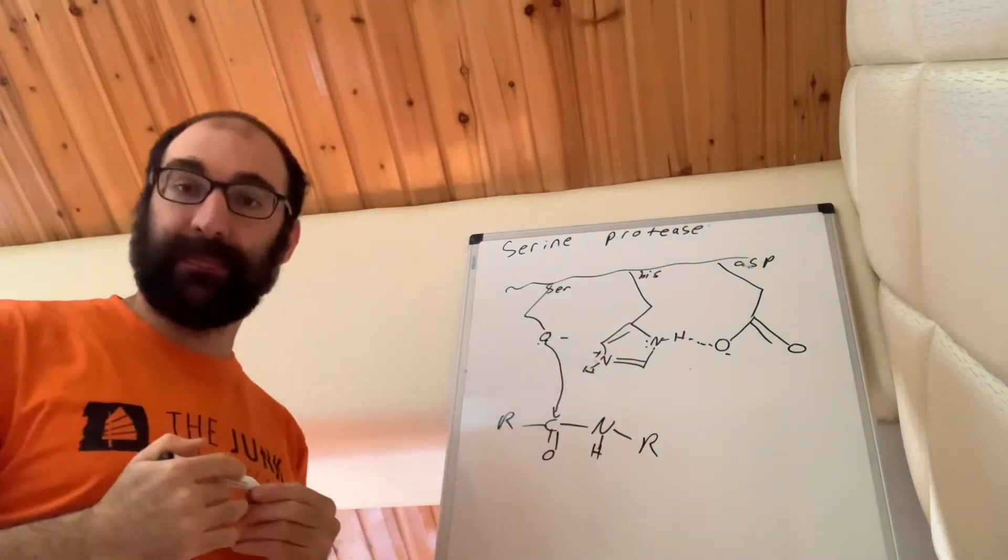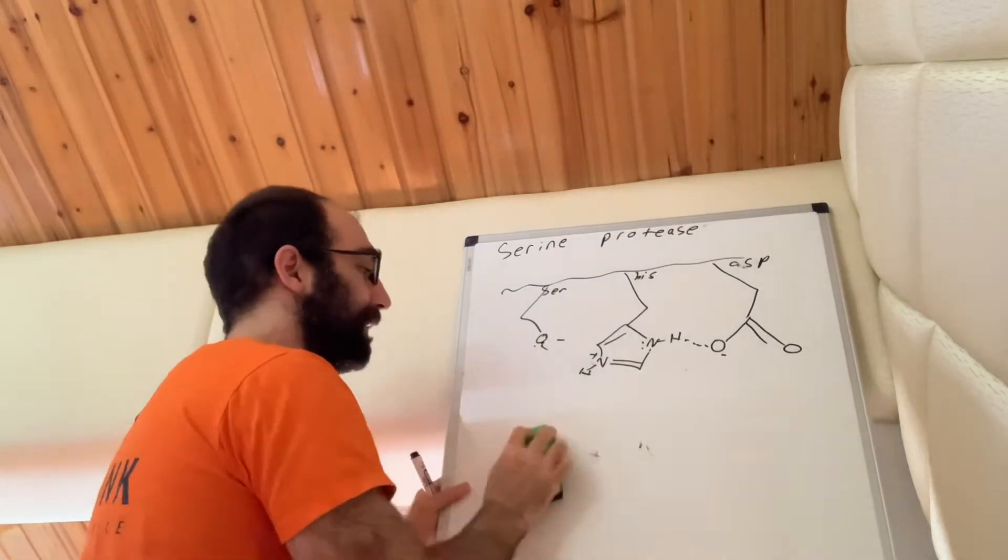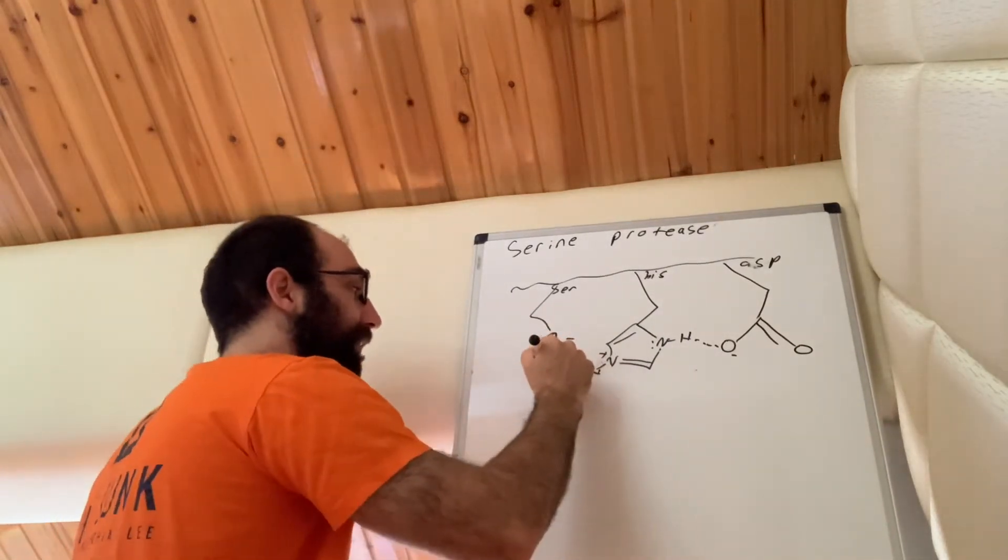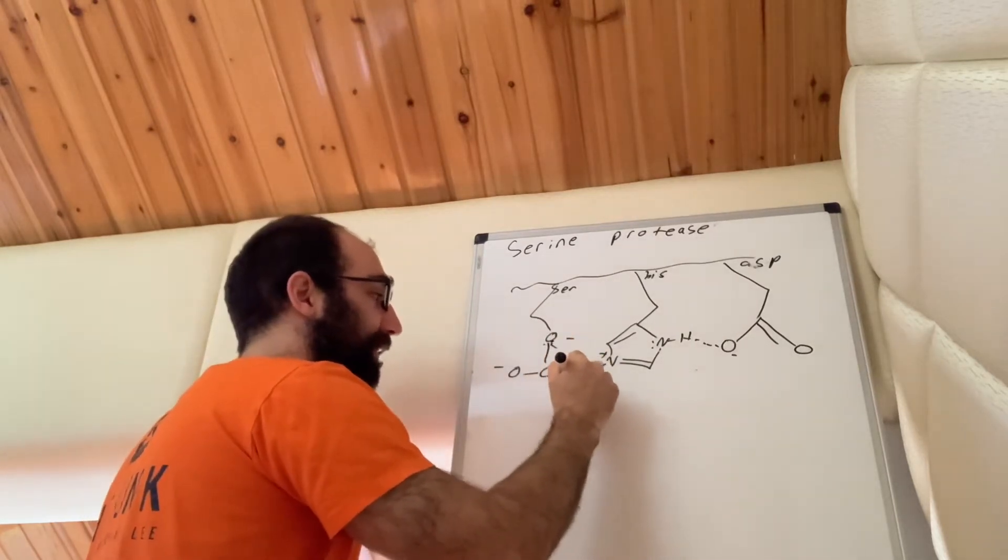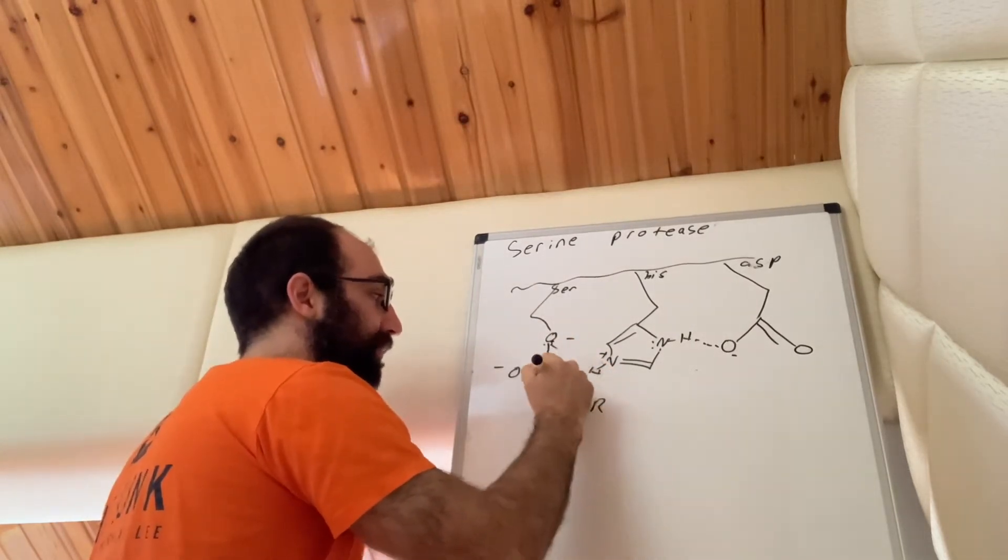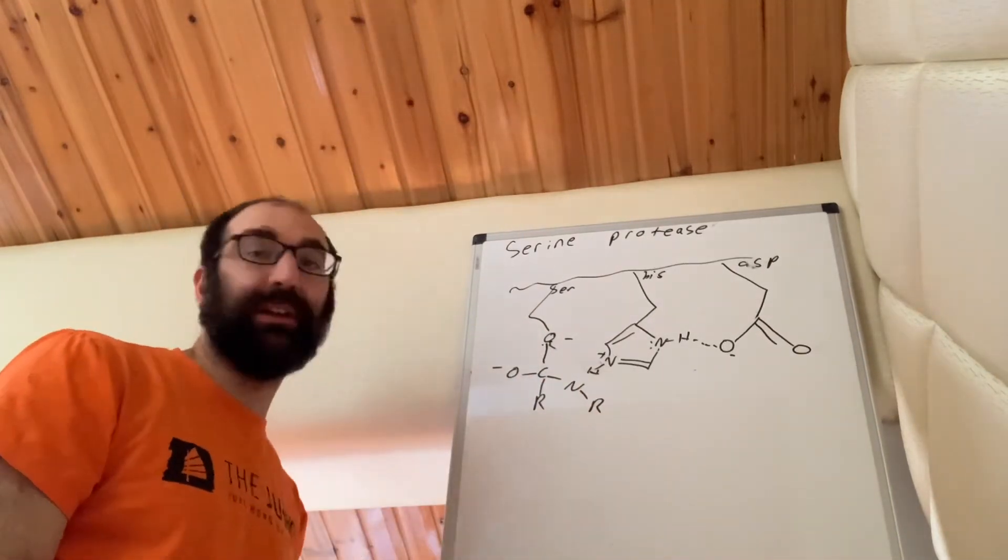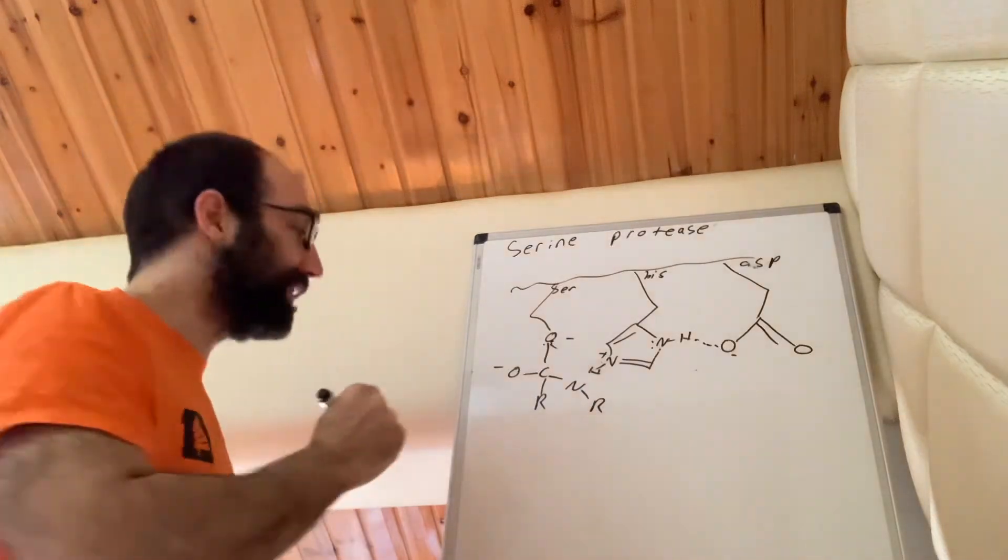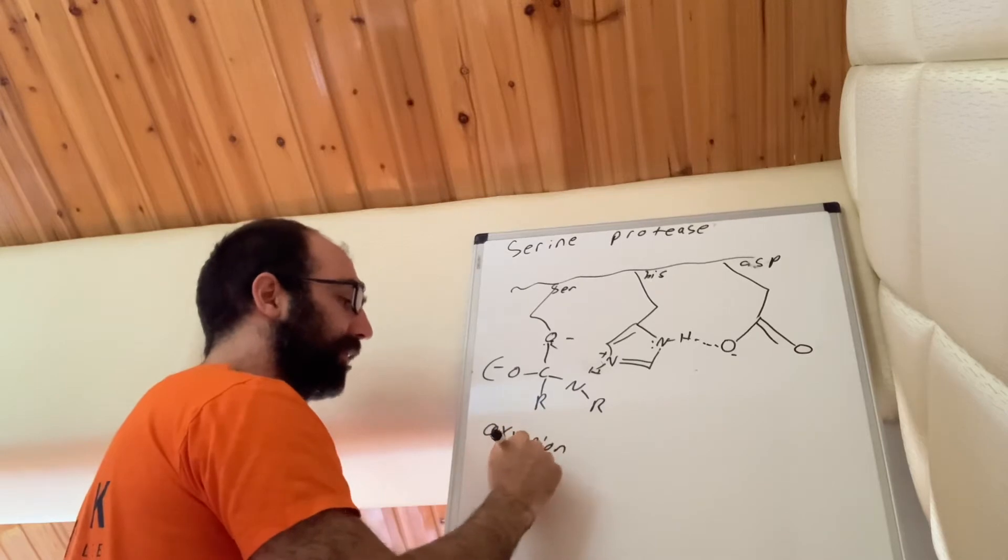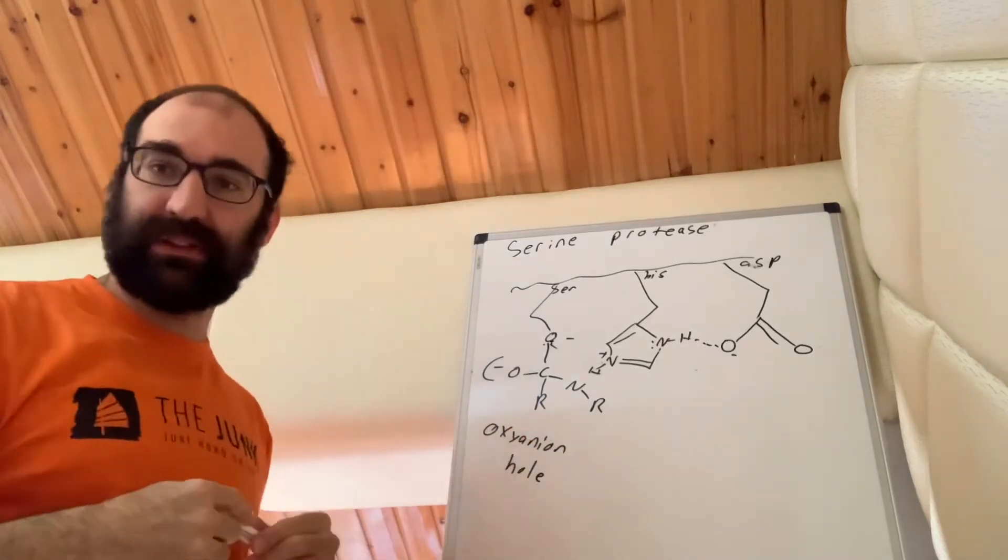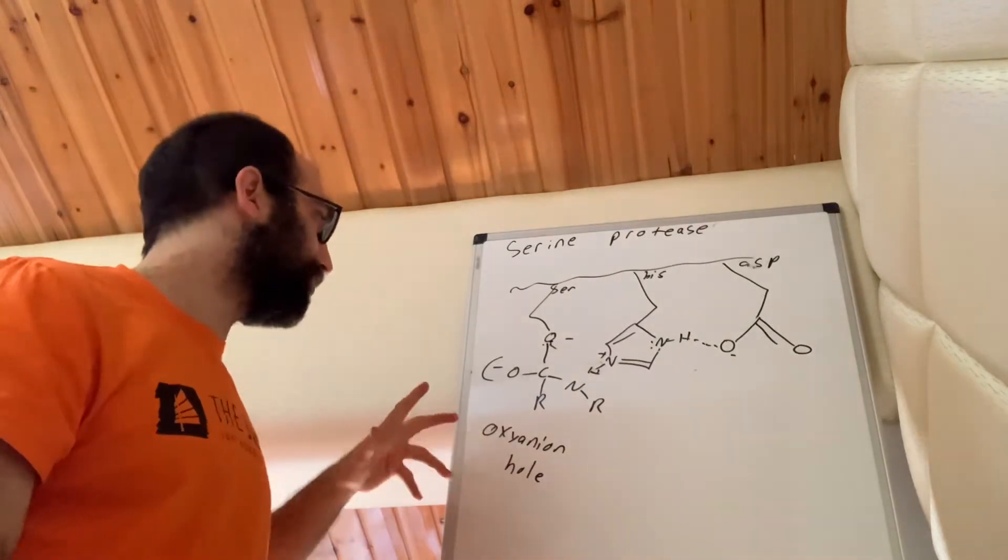So what he does is he attacks this carbon. And this causes some pretty big changes, because now we have one, two—those electrons need to go up—three, and four. So this carbon is now a tetrahedral carbon, which he's okay with. Carbon can form four bonds. But there's this negative charge here, which is in a place called the oxyanion hole. It's a stabilization, and it just lowers the activation energy so that you don't end up getting this oxygen that's super high of a level.